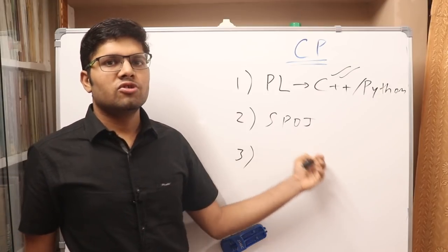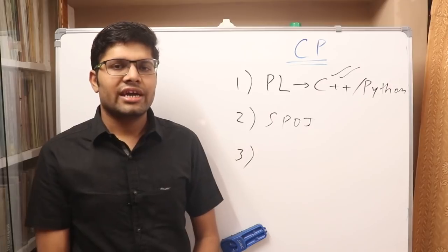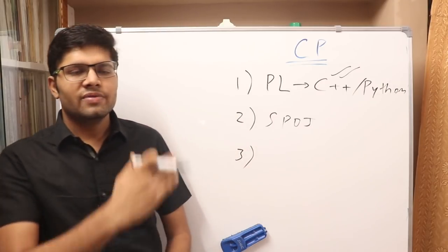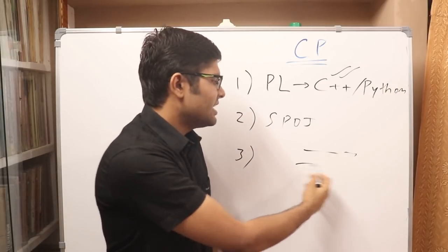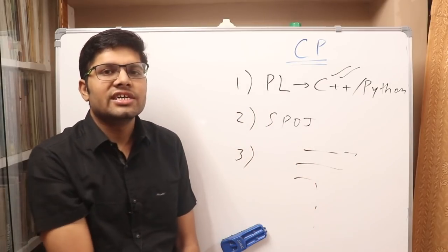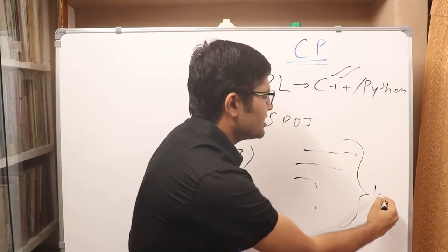So you should go to SPOJ, you should go to problems and sort them by the number of candidates who solved them. Why am I saying this? Because if you sort them by the number of candidates who solved them, then you will get a list - basically, the first one will be solved by the most number of students, then second, something like this. This shows that the problems are somewhat arranged in an order of increasing level of difficulty.